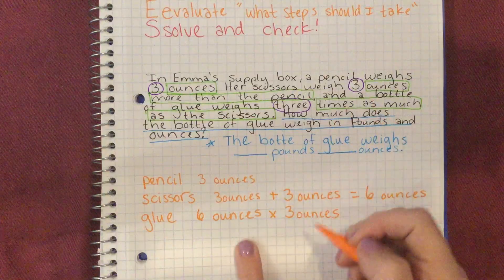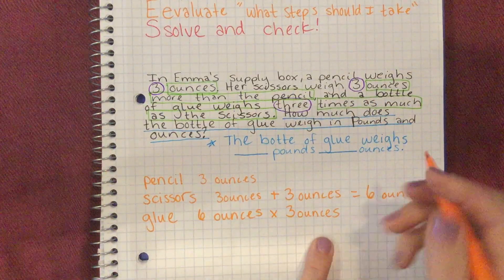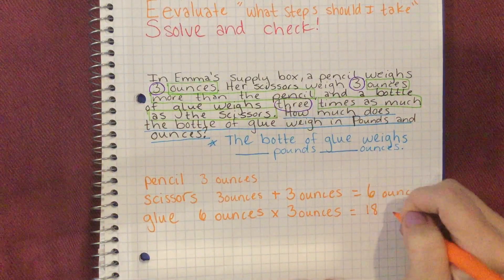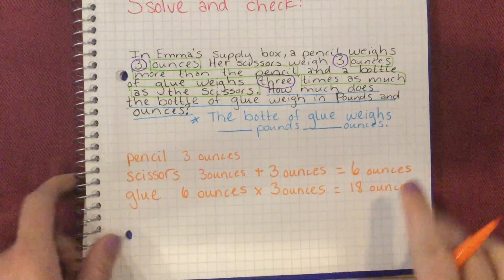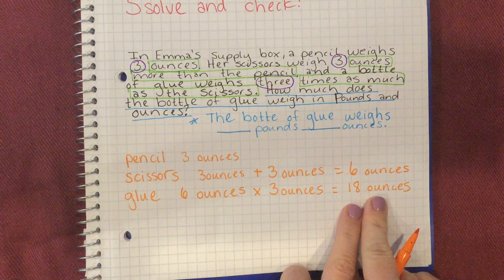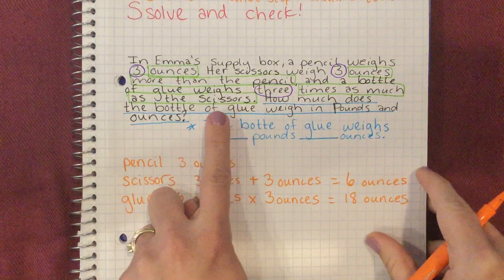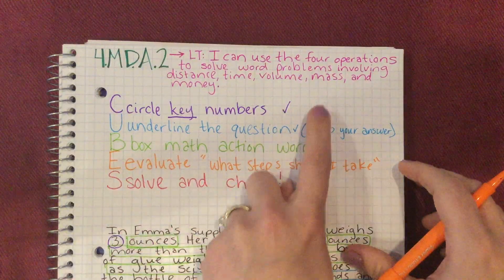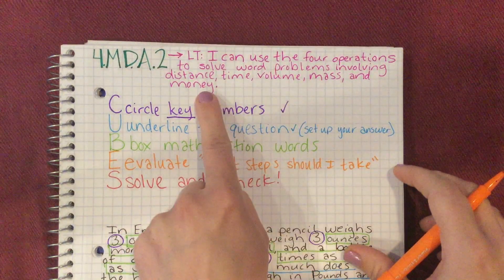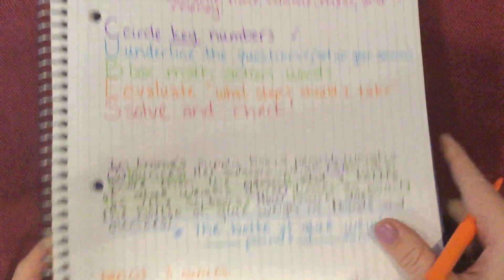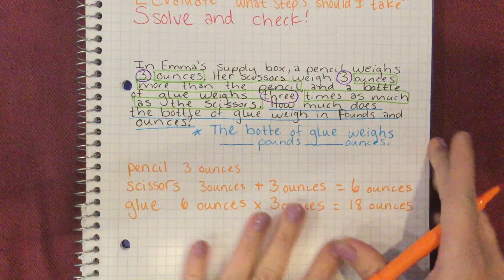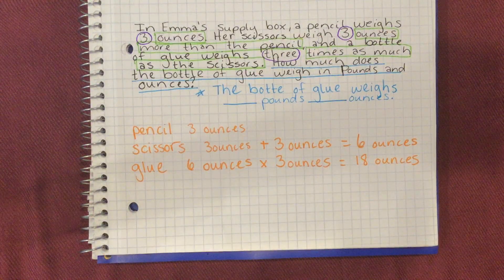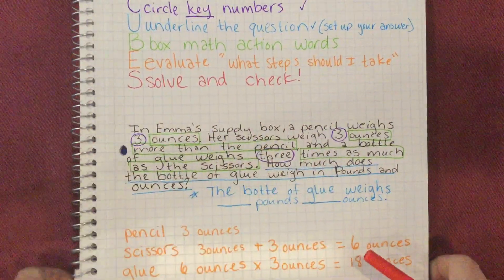It's right in the word 'times' — we multiply. The glue weighs three times as much as the scissors, which weighed six ounces. So how many ounces does the glue bottle weigh? That's right — 18 ounces. Now, is that going to be our final answer? It's not, because remember the question says: how much does the bottle of glue weigh in pounds and ounces? So we need to go back to our work from last week and do a conversion table from pounds to ounces. I'm going to set up my conversion table right here, and that is going to be part of the solve and check in CUBES. I know that one pound is 16 ounces.